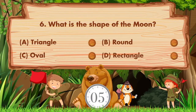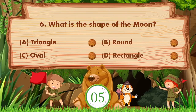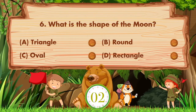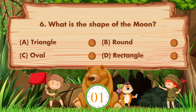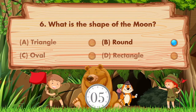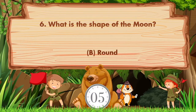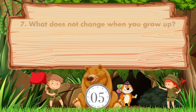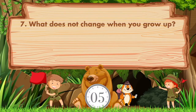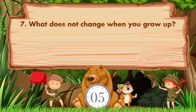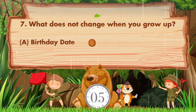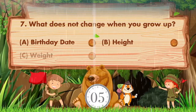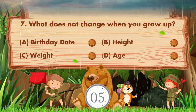What is the shape of the moon? Option A: triangle, B: round, C: oval, D: rectangle. Answer is option B, round.